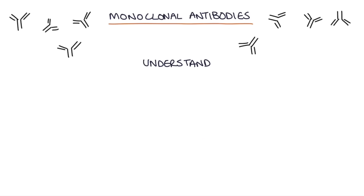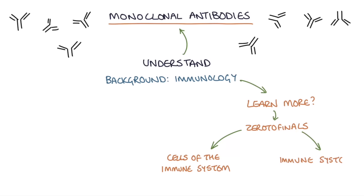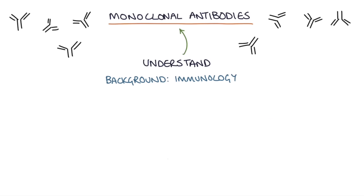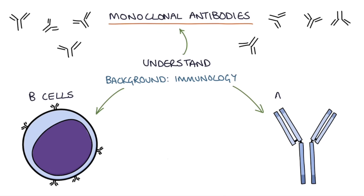To understand how monoclonal antibodies work, firstly we need a bit of background knowledge of immunology. If you want to learn more about the immune system, I recommend watching the ZeroToFinals video on the cells of the immune system and the immune system in one video, but for this video we're going to focus on the most relevant parts, mainly the B cells and the antibodies.